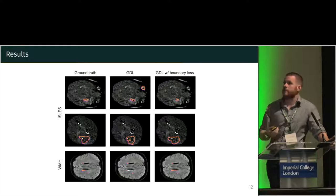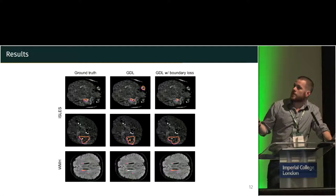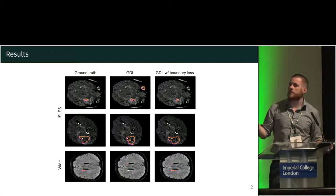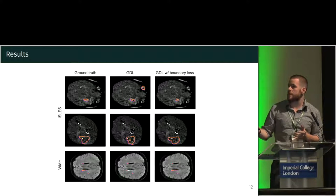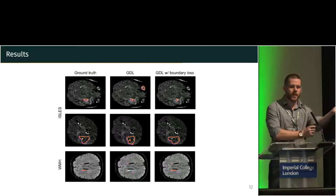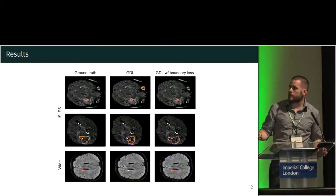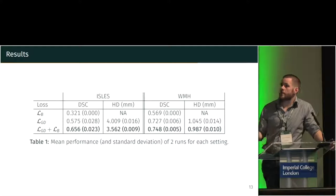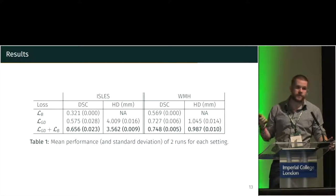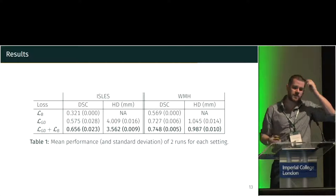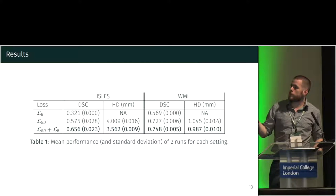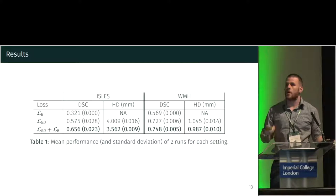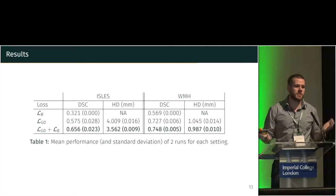Looking at the results visually, we can see different kinds of improvements. Some false positive areas present when training only with GDL tend to disappear when training with GDL plus boundary loss. We also obtain smoother boundaries with less noise and no small gaps inside the object anymore. It also helps to recover small areas that are tricky to detect and that GDL alone tends to miss. Quantitatively, we see big improvements in both Dice and Hausdorff distance — almost 8% improvement on ISLES. These results use the exact same network, same hyperparameters, and same learning rate schedule; all that changed is the new boundary loss and the shifting weight between the two losses.